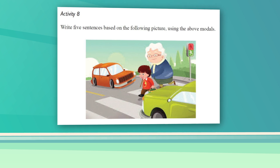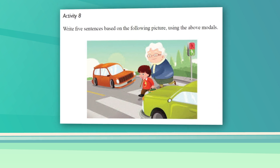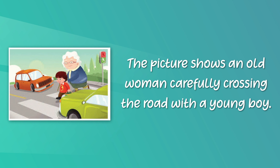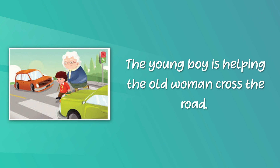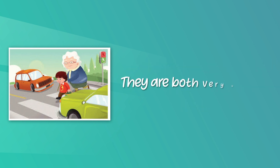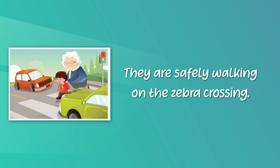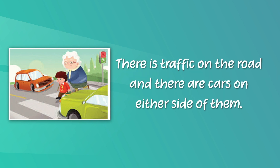Now turn to page 8 in your pupils' book, Activity 8. Look at the picture given — you are asked to write five sentences based on this picture. Let's do it together. 'The picture shows an old lady crossing the road with a young boy. The young boy is helping the old lady cross the road. They are both very happy. They are safely walking on the zebra crossing. There is traffic on the road and there are cars on either side of them.'